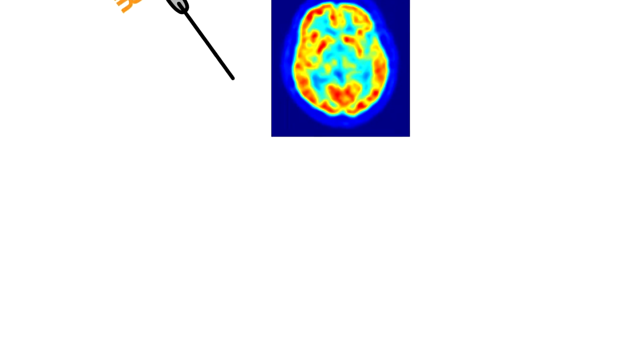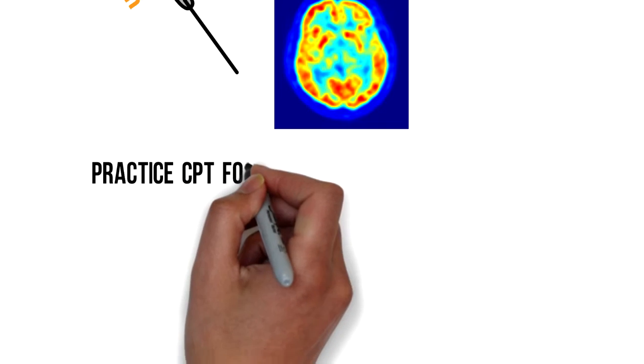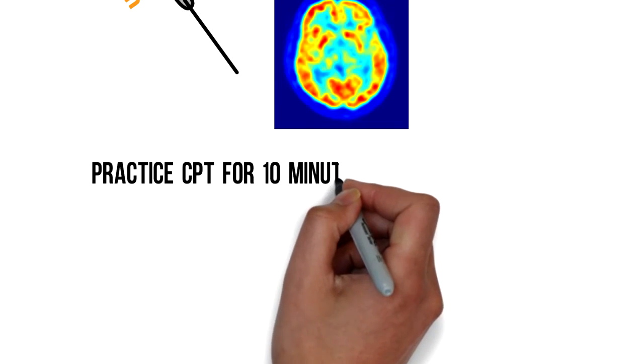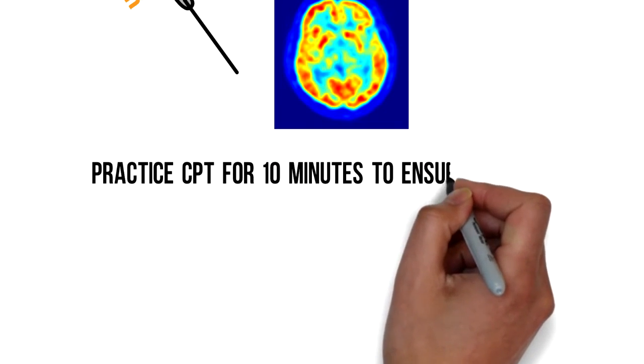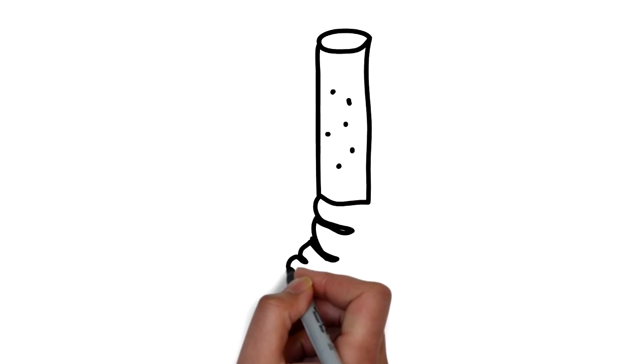Raine implemented controls in his experiment as all the participants were allowed to practice the continuous performance task 10 minutes before the glucose tracer was injected. This made sure that all of the participants were equally familiar with the test.